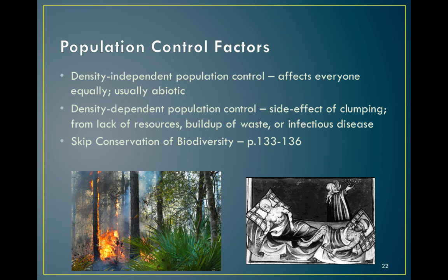Two types of factors influence population density. Density-dependent factors become more of a problem the more individuals you have per unit area — examples include disease, predators, and access to resources like food, space, and water. Density-independent factors are disasters that impact the population regardless of its size — like a forest fire, hurricane, landslide, or flood.